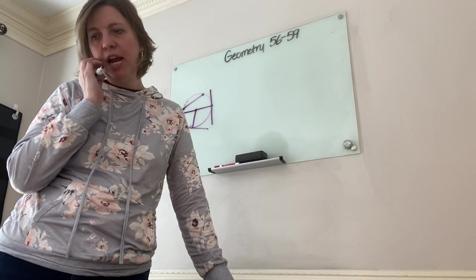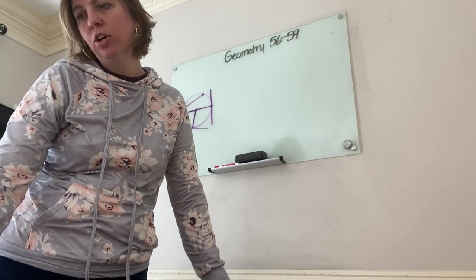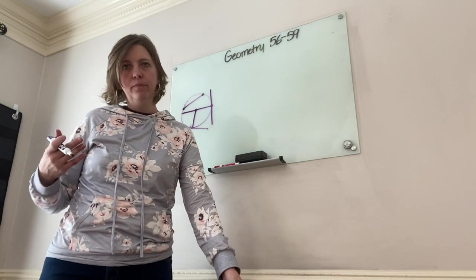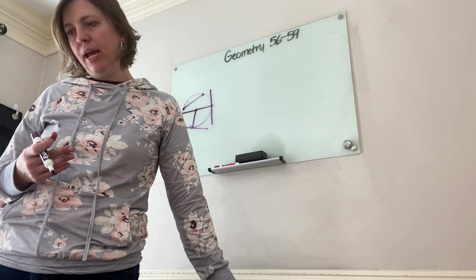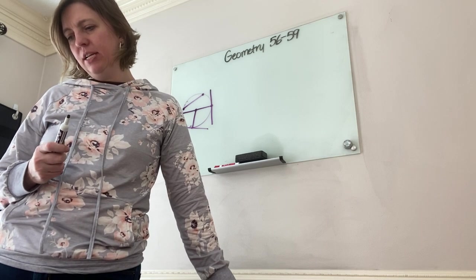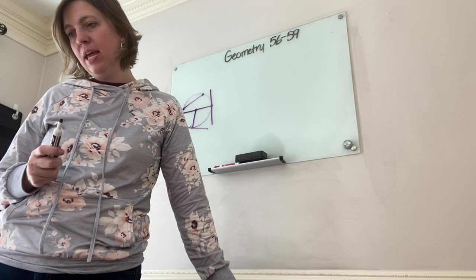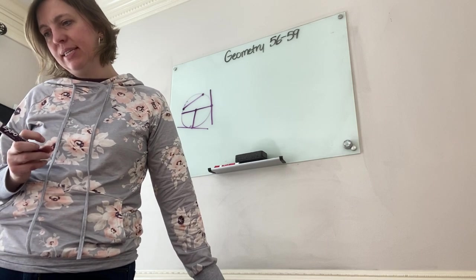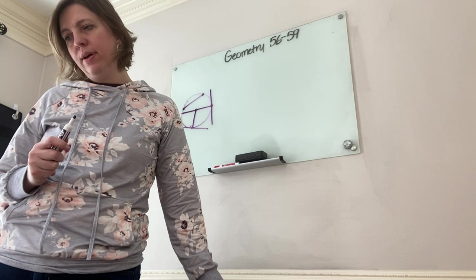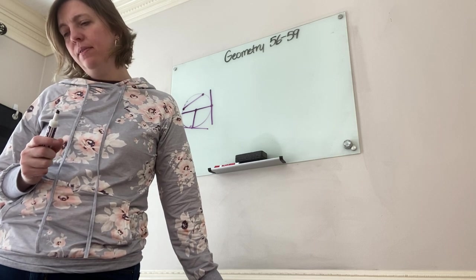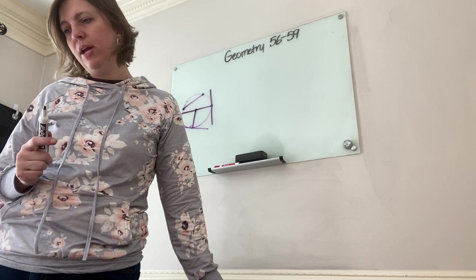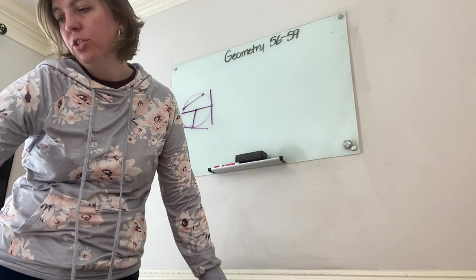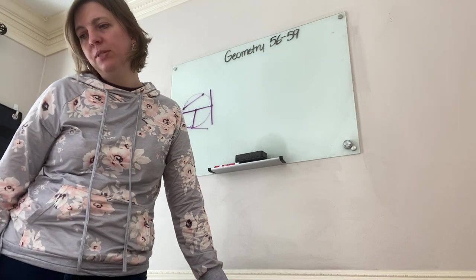On page 382, the converse: if a line in the plane of a circle is perpendicular to the radius at its endpoint on the circle, then the line is tangent. On page 383, another theorem: if two tangent segments are drawn to a circle from the same exterior point, then they are congruent.